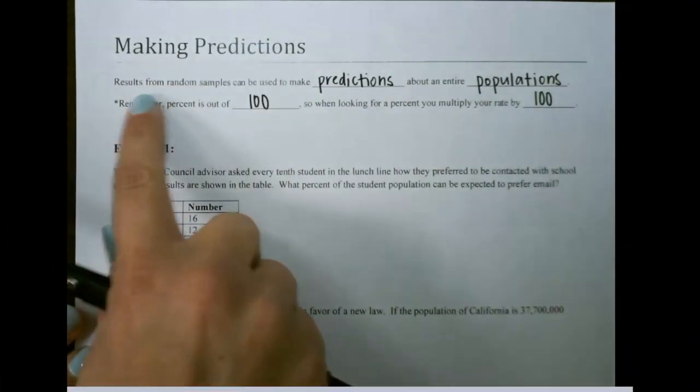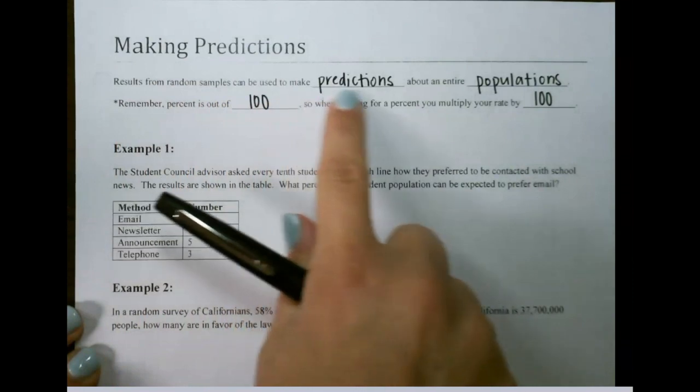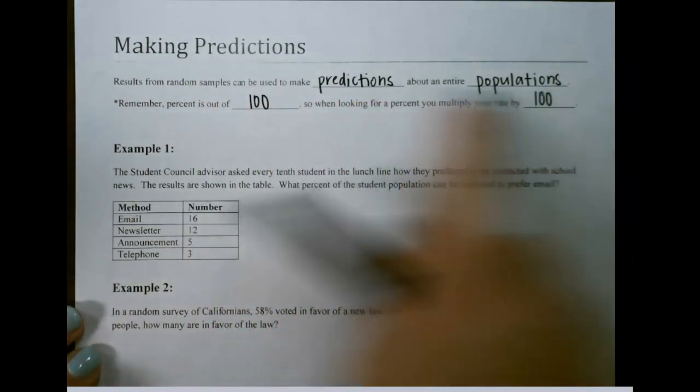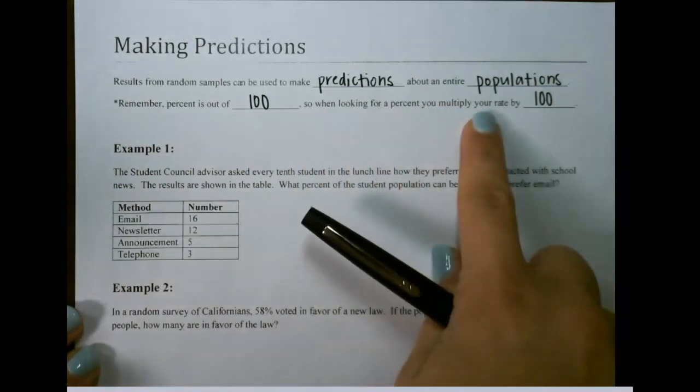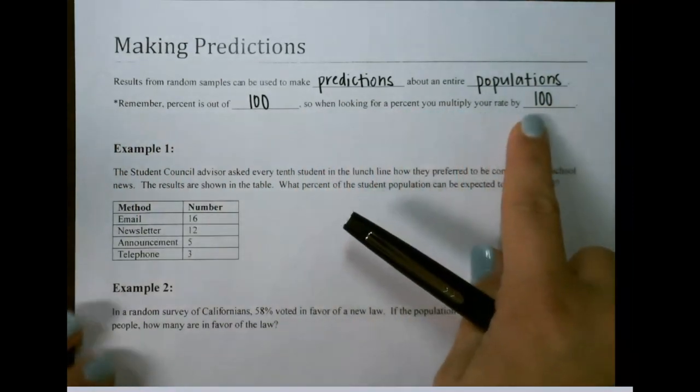Making predictions. Results from random samples can be used to make predictions about an entire population. Remember, percent is out of 100, so when looking for a percent, you must multiply the rate by 100.